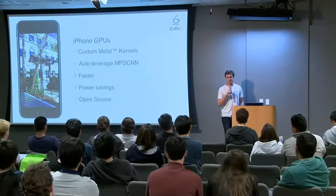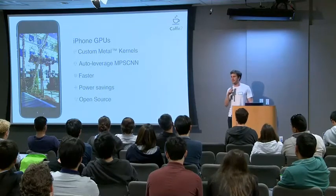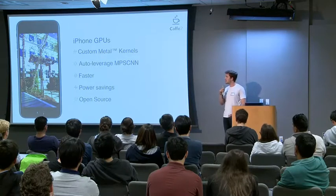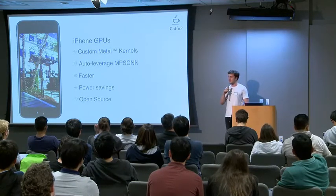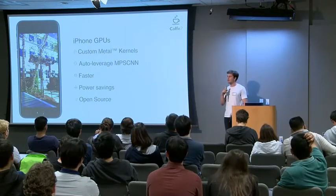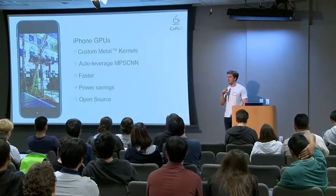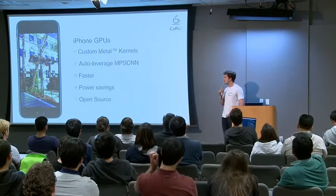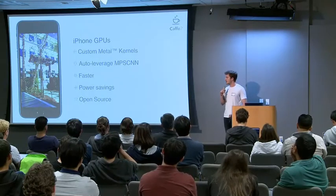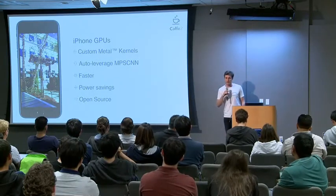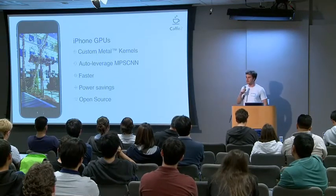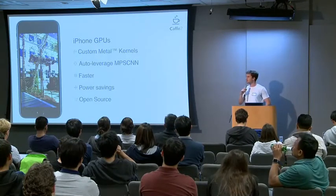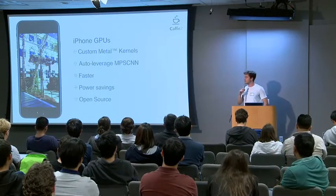We have the function to auto-rewrite the graph and use MPSCNN, giving extremely fast inference on iPhone GPUs. The power savings are also pretty good — even when you are using the GPU, the flops per watt is substantially better on iPhone GPUs. All the code is there; if you check out the repository, under contrib you'll find iOS FB or Metal FB with all of these things.